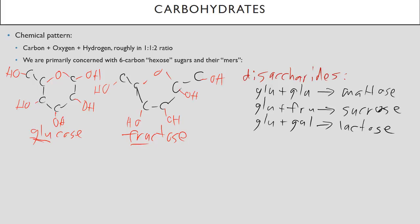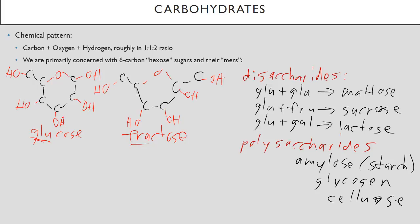And then finally, there are polysaccharides. Some examples of those include amylose, also known as starch, glycogen, and another famous one is cellulose, the paper you are probably taking notes on if you're taking any notes on this lecture.